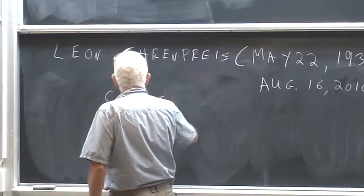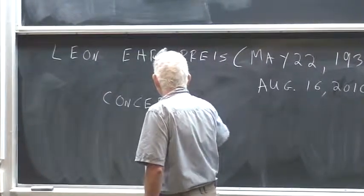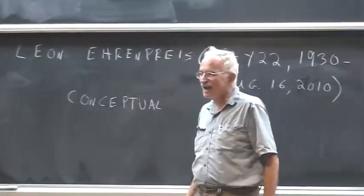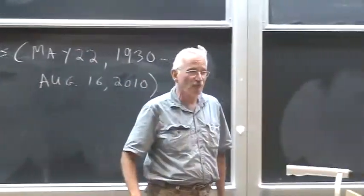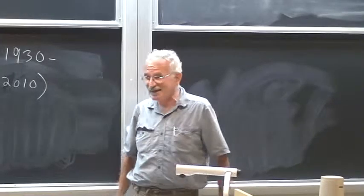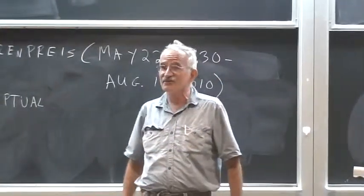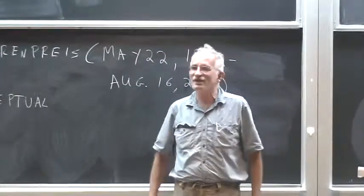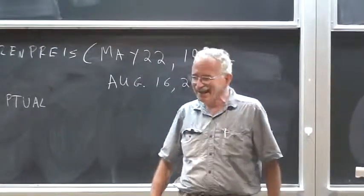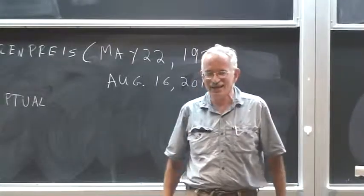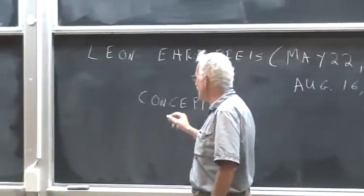He was also a rabbi, an ordained rabbi, but he was also religious in a more profound way. He was mathematically religious. He believed that every mathematical statement could be done without any calculations. All you need is to think about it deeply enough. He was conceptual.